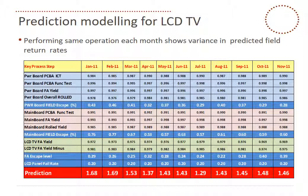If we look at the entire process and perform the same prediction modeling for each sub-assembly each month, we can show the variance in predicted field return rates. For the power board we do it, and we do the same for the main board — using the rolled yield, which is purely a PCB function test and main board final assembly yield multiplied together. We have a different data fit factor, because it's different failure rates, a wider range of defect possibilities, etc. For final assembly, we do similar modeling using the final assembly yield minus electronic defects and define a final assembly escape level in the same way.